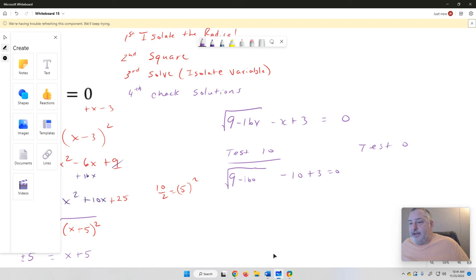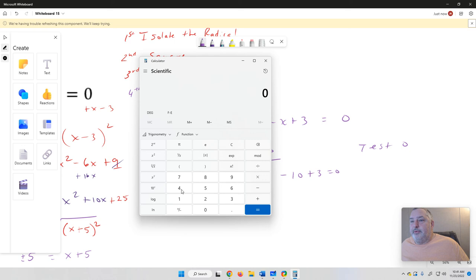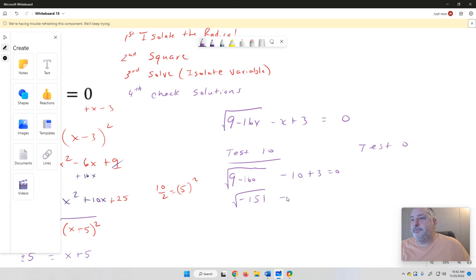I've got 9 minus 160, that gives me negative 151 in the radical. Minus 10 plus 3. There's no way that's going to equal 0, because this is an imaginary value. So 10 is not a good solution. 10 is no good.